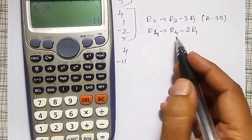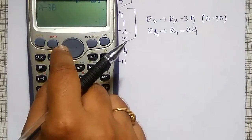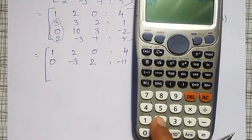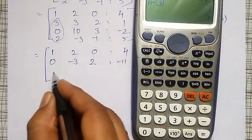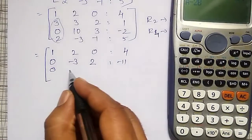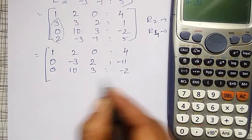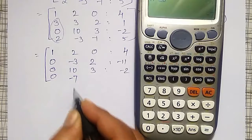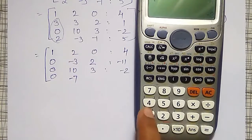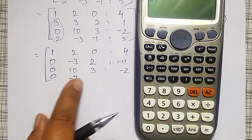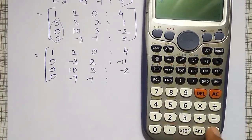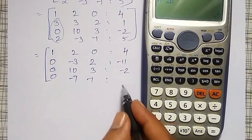For R4 minus 2 times R1: row 3 will remain as it is. For R4, using the calculator: 0, minus 7, minus 1, minus 3.